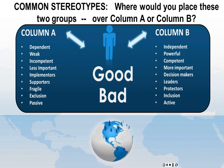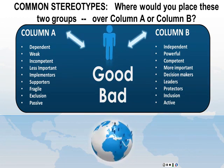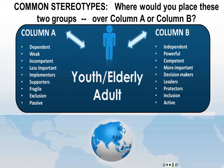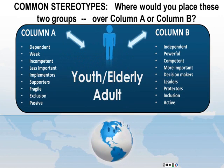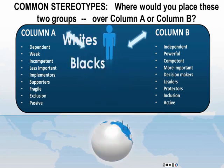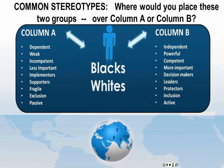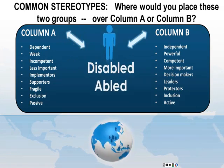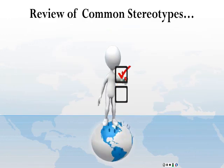Write your answers on the notepaper you downloaded from Canvas. For each word, pick column A or column B. Consider: youth, elderly, adult; men and women; Blacks and whites; disabled and abled. Reviewed the common stereotypes — diversity check.